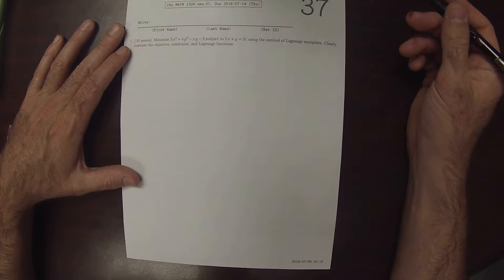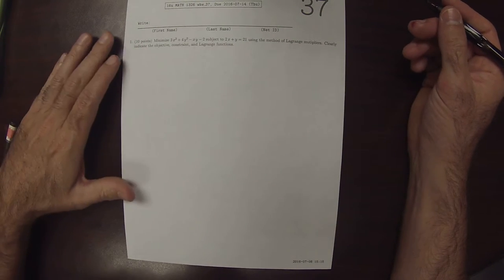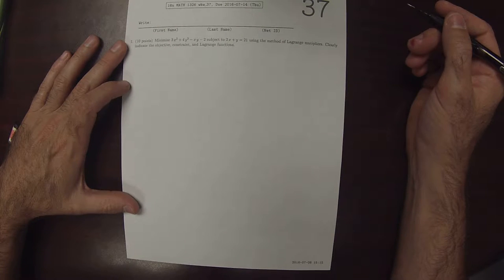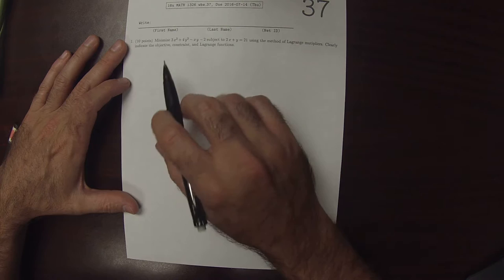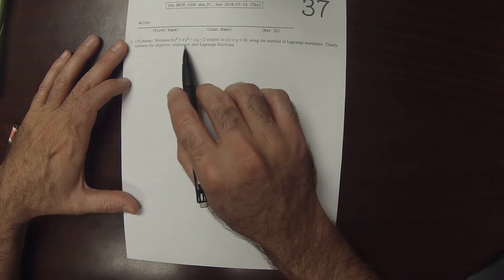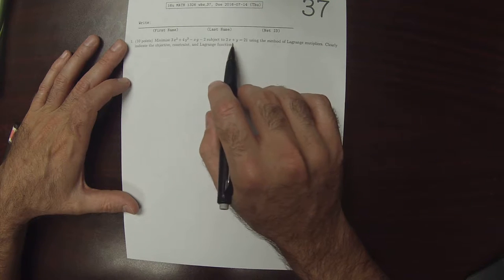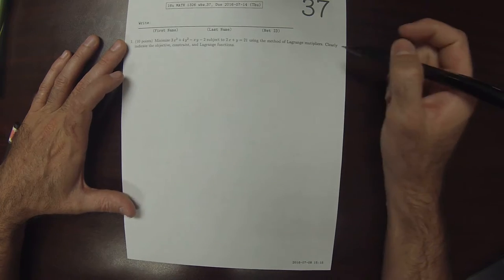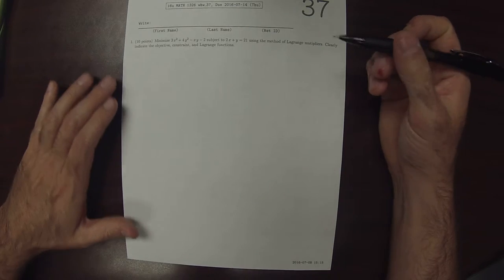This is the solution to written homework 37. We're given an expression of two variables to minimize, subject to an equation in two variables, and we're told to use the method of Lagrange multipliers.